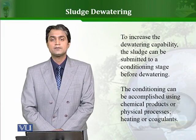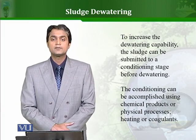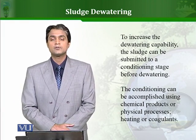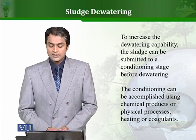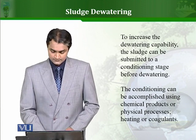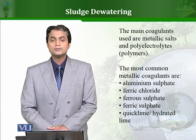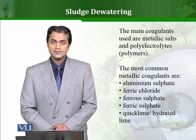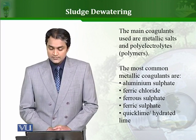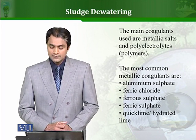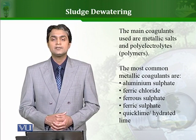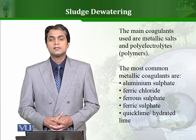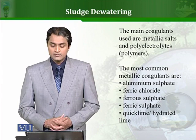If we want to increase the dewatering efficiency of a system, we can condition the sludge before moving to the dewatering process itself. Mostly chemicals are used, or heat can also be used. The chemicals mostly used are coagulants — the main coagulants are metallic ions or polyelectrolytes (polymers). The most common metallic coagulants used are aluminum sulfate, ferric chloride, ferrous sulfate, ferric sulfate, quicklime, and hydrated lime. Once these are used in the sludge followed by dewatering, we can achieve high efficiency of dewatering.